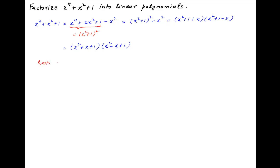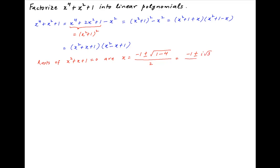Now the roots of the quadratic equation x squared plus x plus 1 equals 0 are: minus 1 plus or minus the square root of 1 minus 4, divided by 2, which is equal to minus 1 plus or minus i times root 3, upon 2.